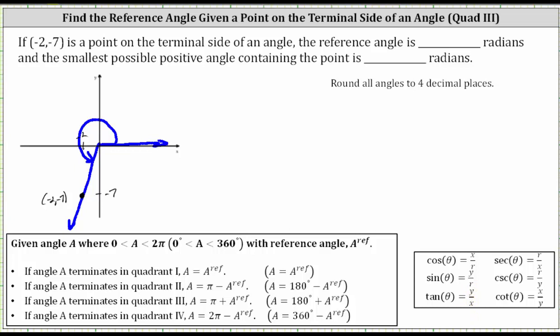So if we call the angle we are looking for angle A, we know that tangent A must equal y divided by x, or in our case, negative seven divided by negative two, which simplifies to positive 7 halves.